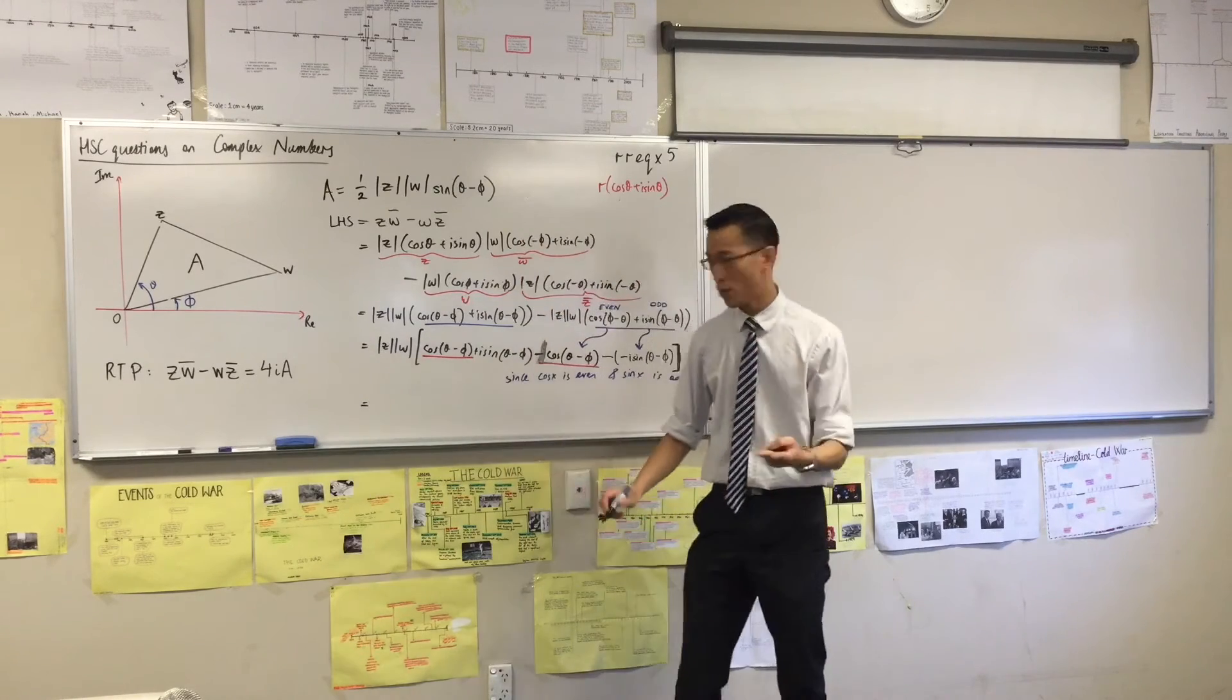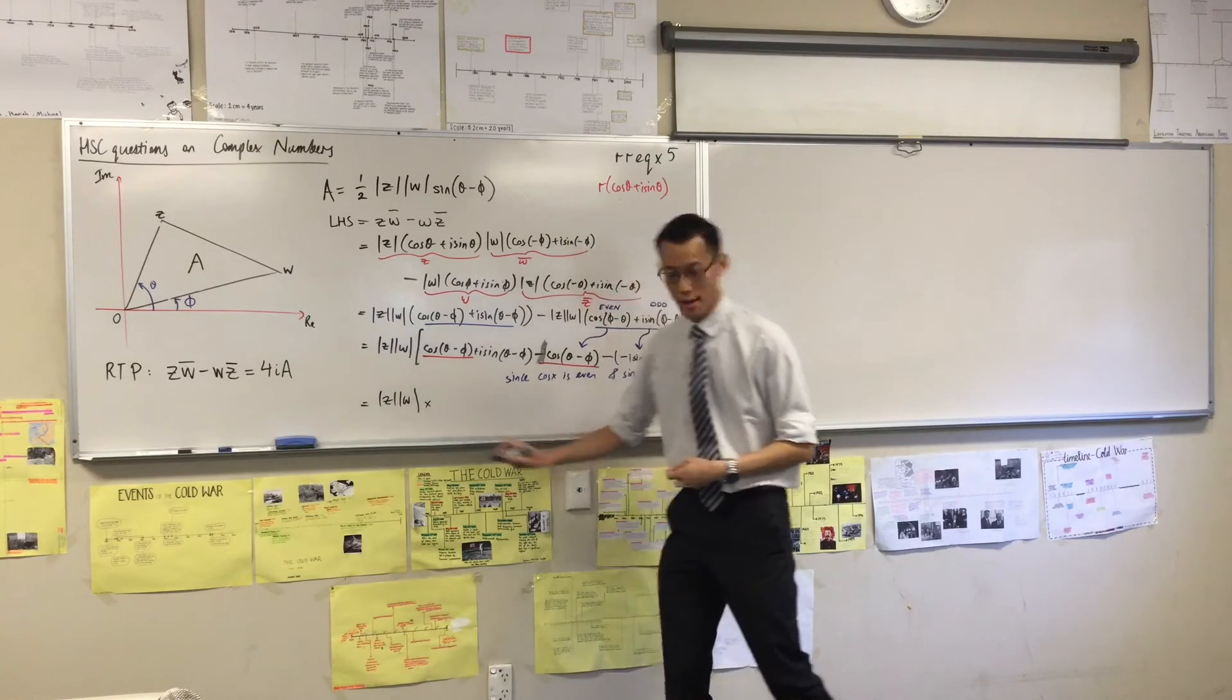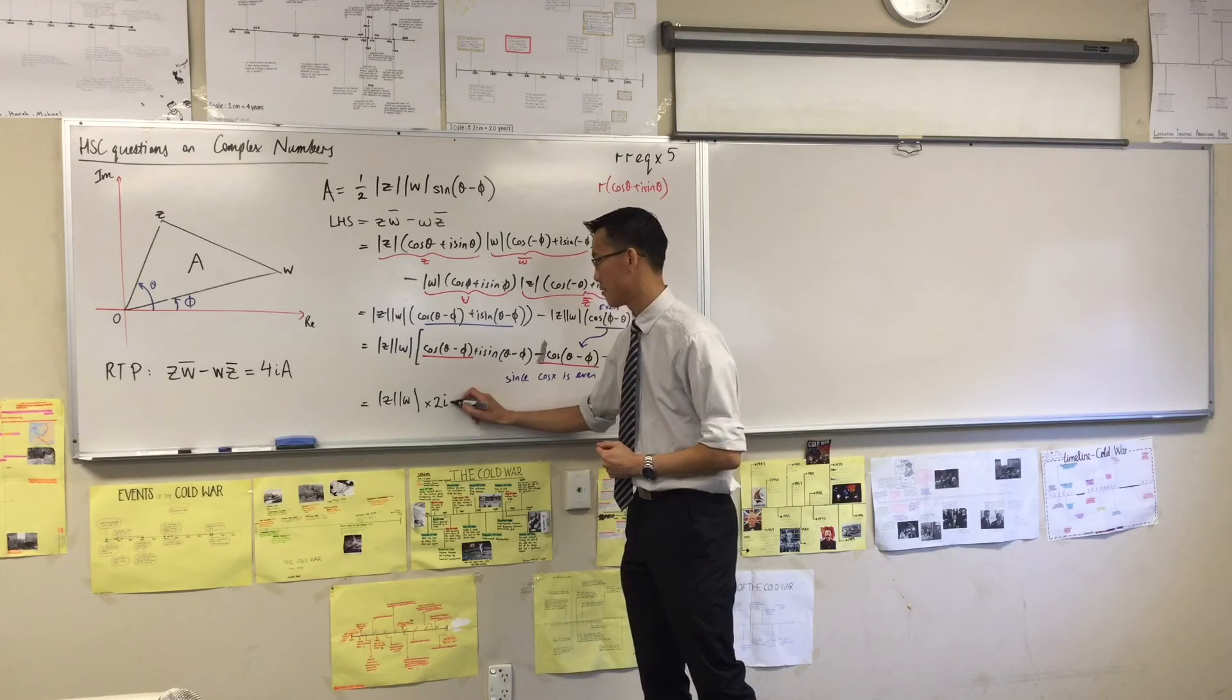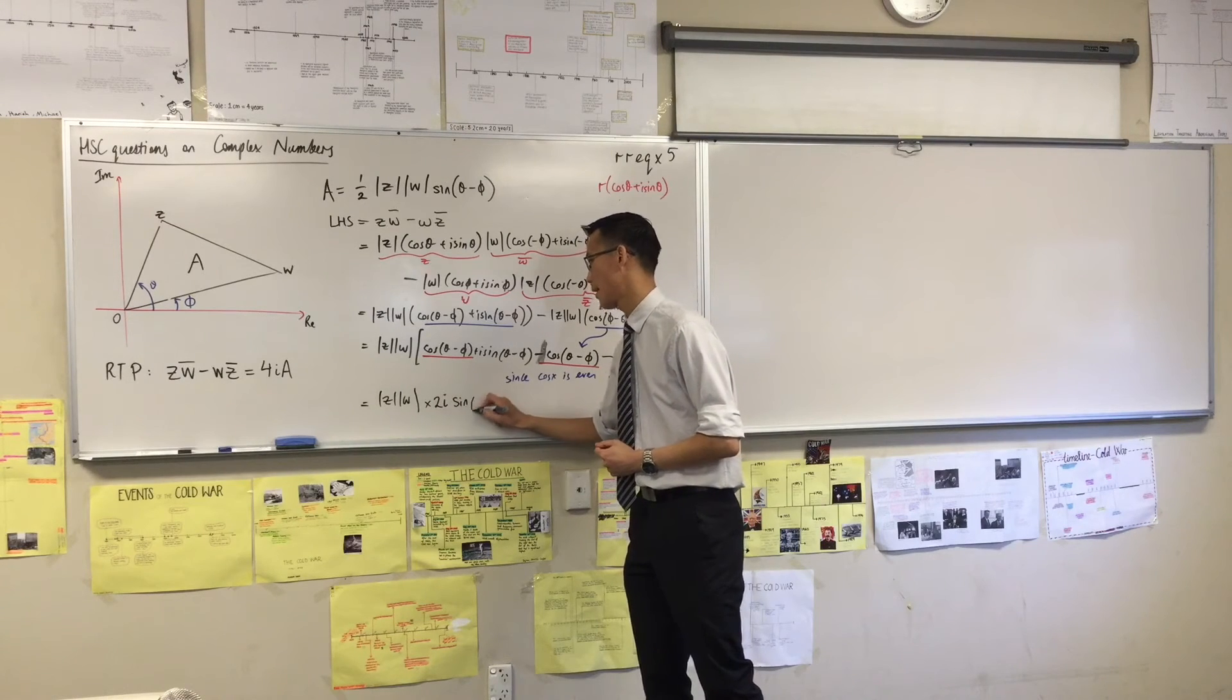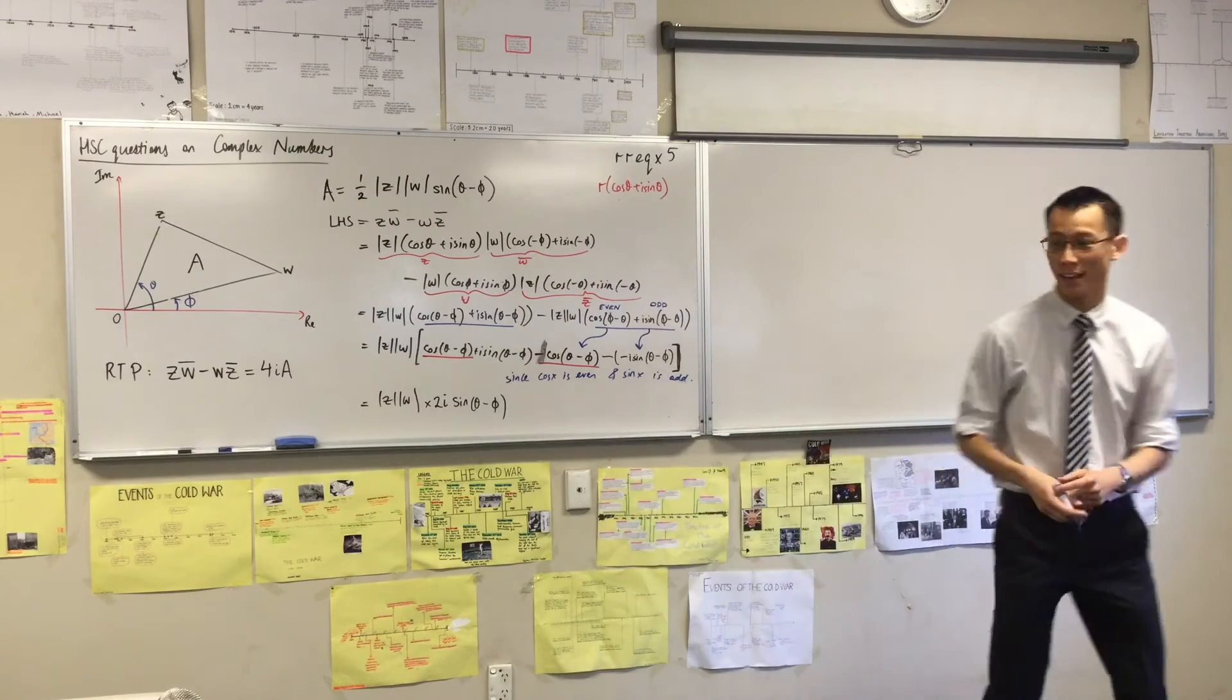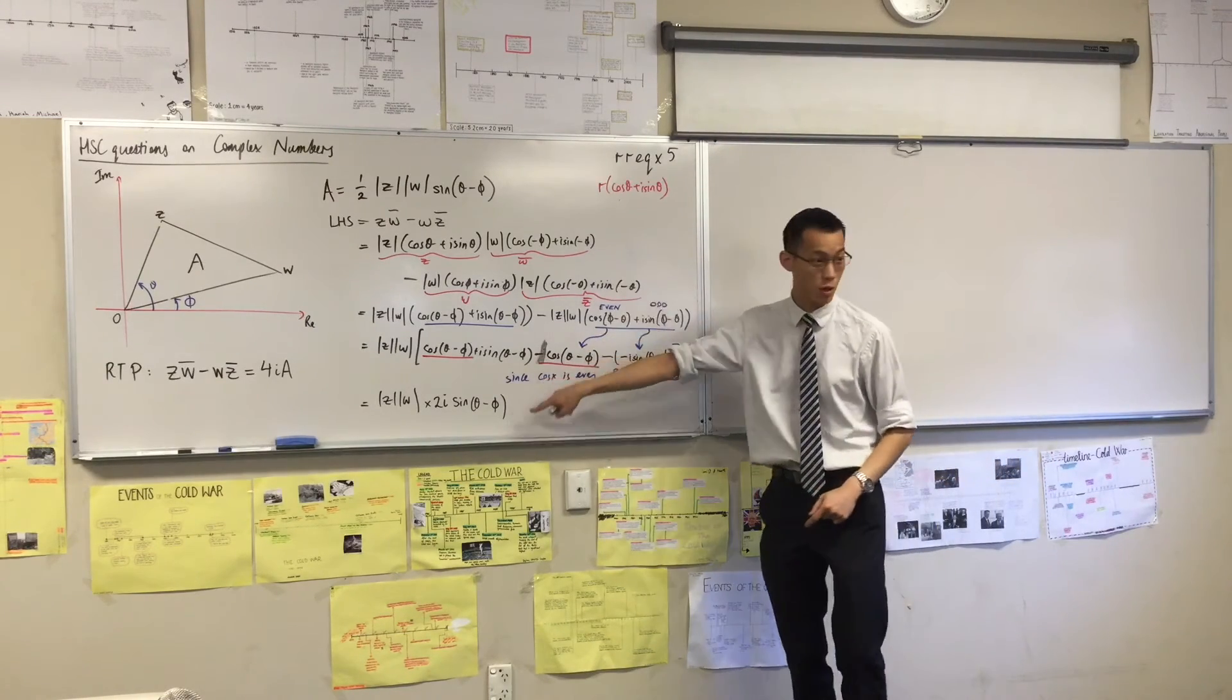Since there's two of them, I'm going to have mod z mod w times, let's have a look, 2i sine theta minus phi. Boy, that simplified down a lot, didn't it? So even though this looks gross to write out, it was just temporary until we could do some work on it.